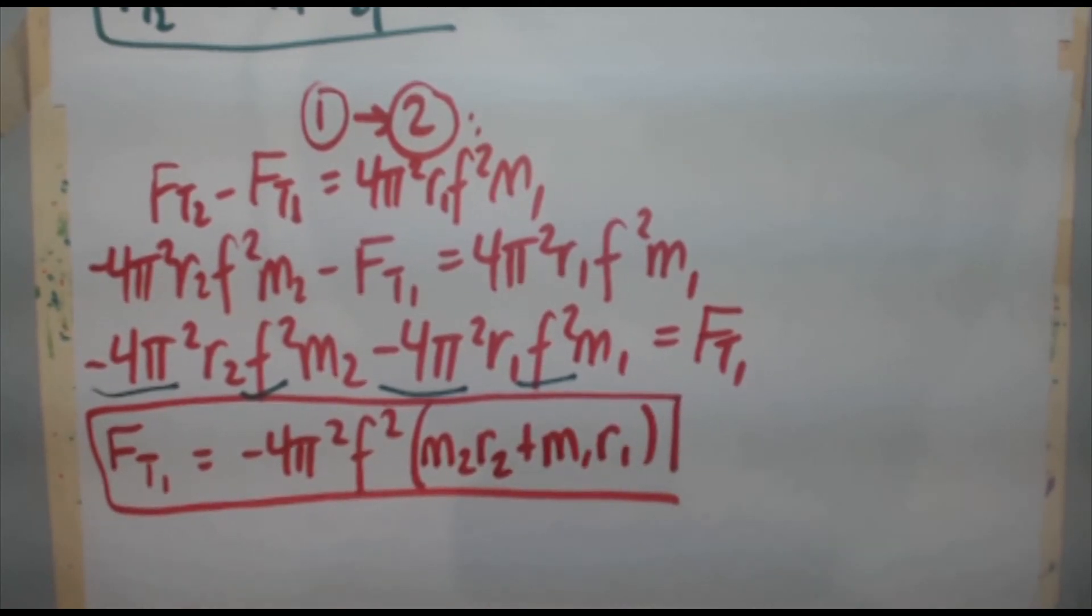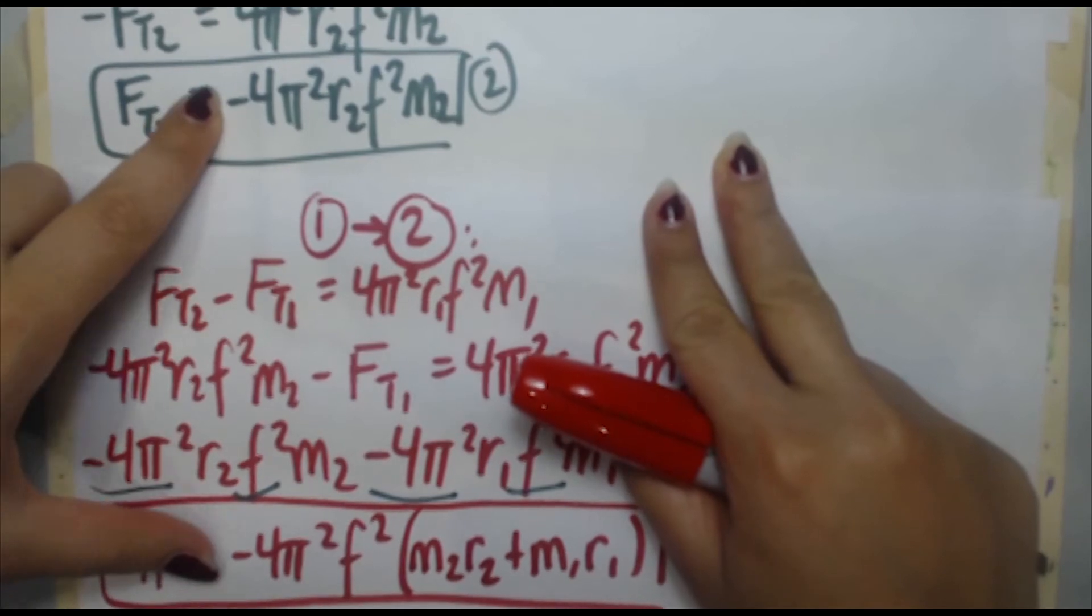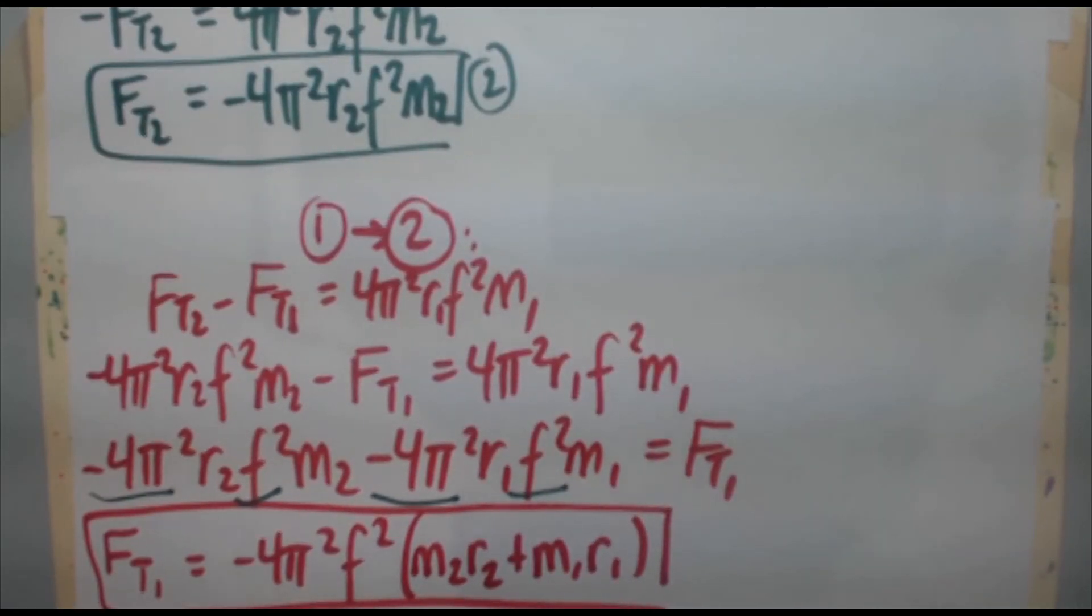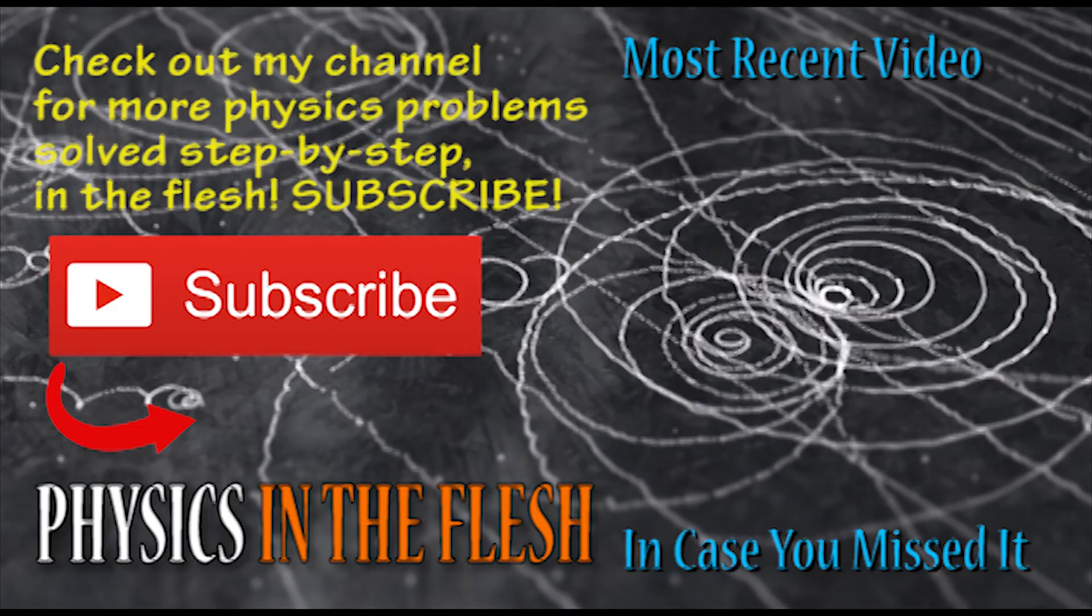So that's it for this video. If you're wondering why the signs came out to be negative for both, that just has to do with the direction I chose to be positive. If you go back to the beginning, the direction I decided to choose as positive was outward. So had I chosen inward, these values would have both come out to be positive. It really doesn't mean anything to say that tension is negative. Either there's a force or there isn't and there's a certain amount. I'm going to end the video there. Be sure to click that like button and subscribe to Physics in the Flush so you never miss a video from me. Talk to you guys later.